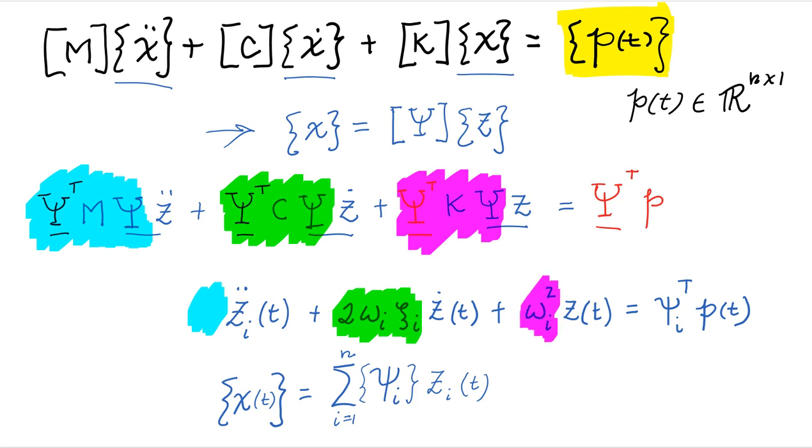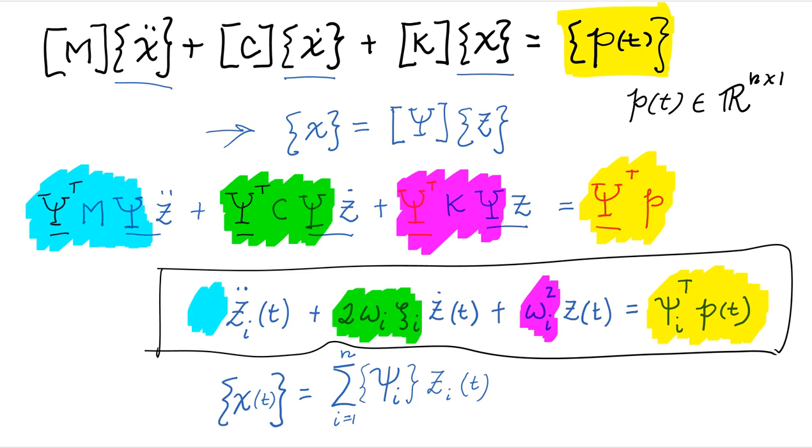Now the term on the right hand side is what we call the modal loading. So it's basically the projection of the load vector into every mode coordinate. And so then that's when you get phi i transpose times p. Once you solve this equation, using any suitable method that we have learned to solve single degree of freedom systems, we need to solve this equation n times for every mode.